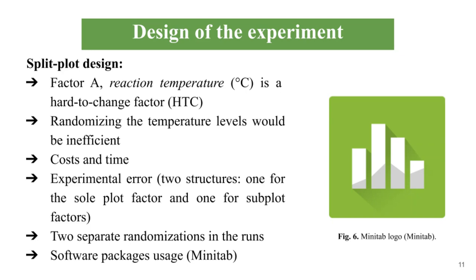Randomizing the temperature would be inefficient, so splitting the experiments under the levels of the temperature factor is suitable, as well as for continuous processing at the lab and industrial scale. Thus, the data analysis would be different from a completely randomized design because effects can significantly vary. This is due to the estimation of experimental error, since in a split plot experiment there are two different experimental error structures — one for the whole plot factor and one for the subplot factors — to separate the randomizations in the runs.